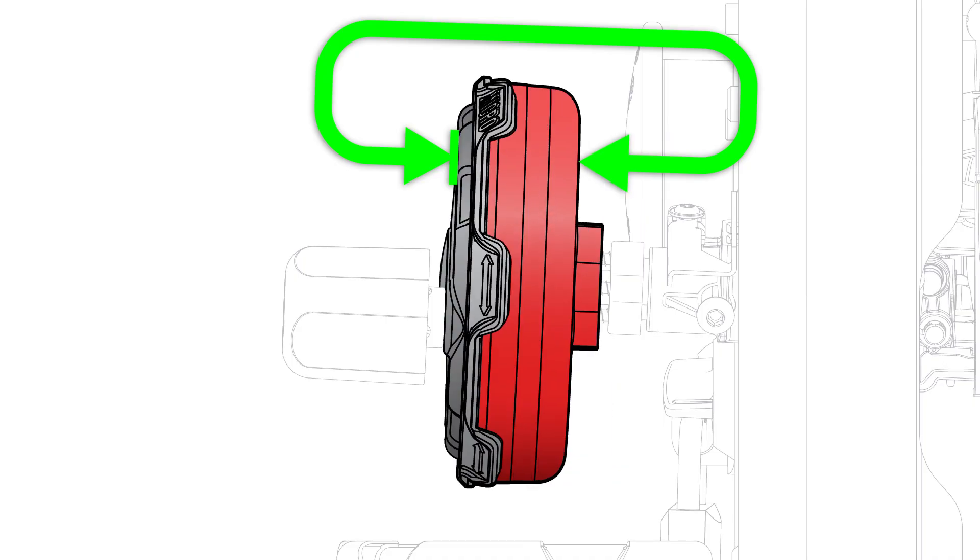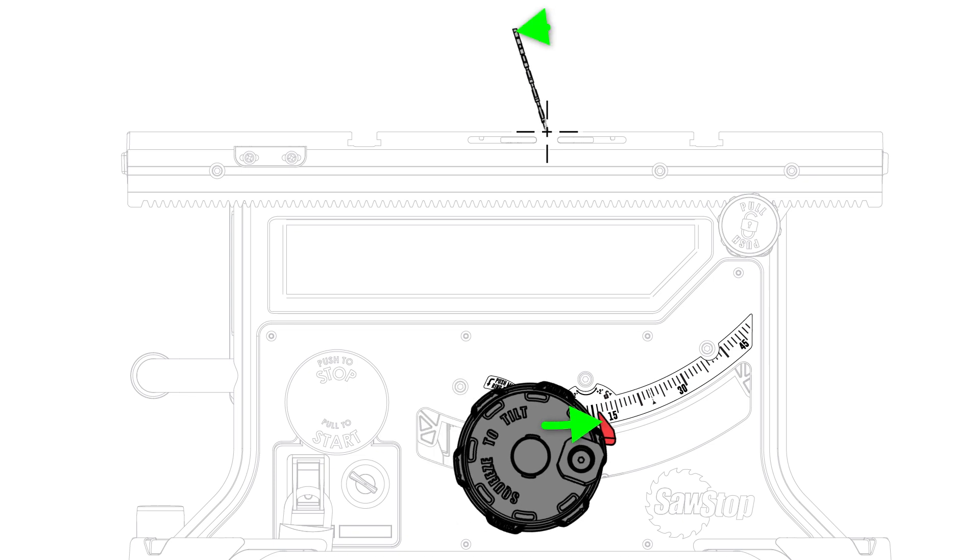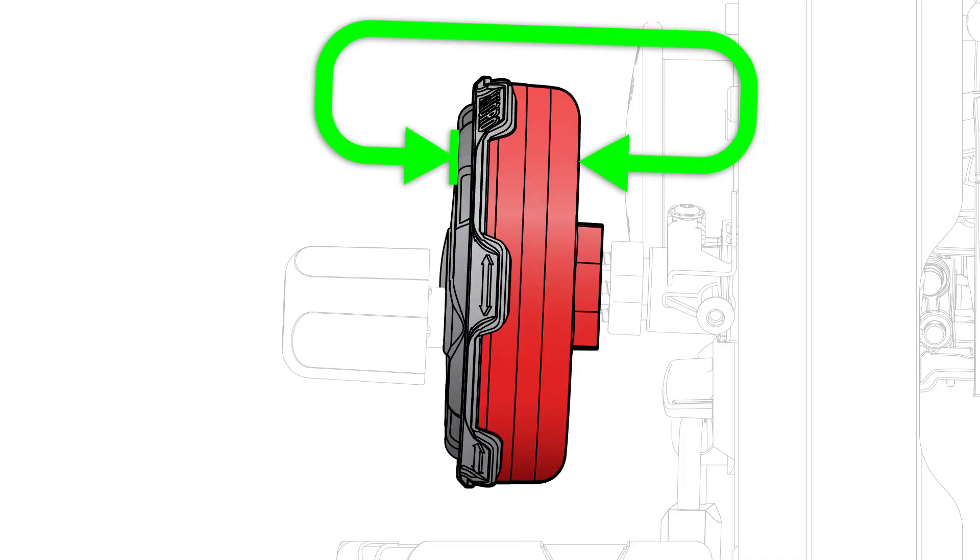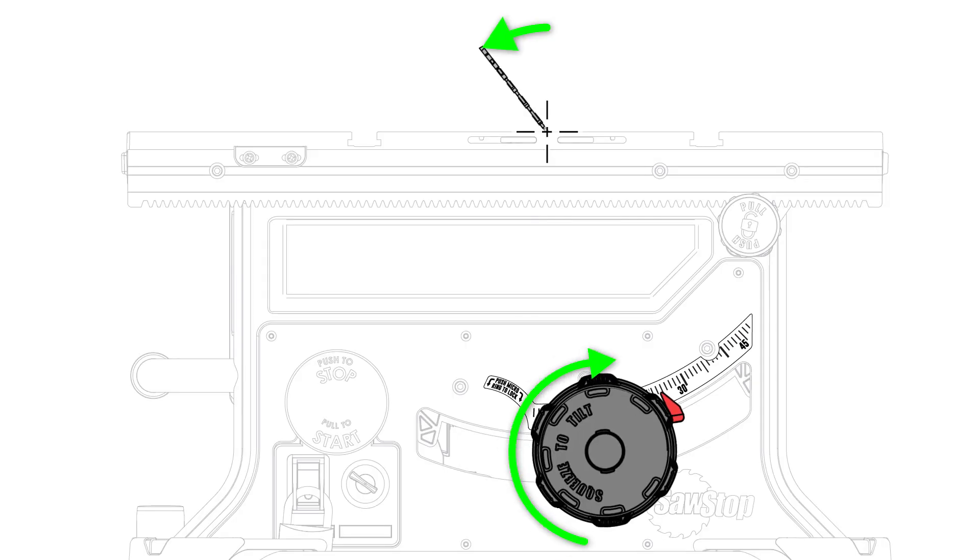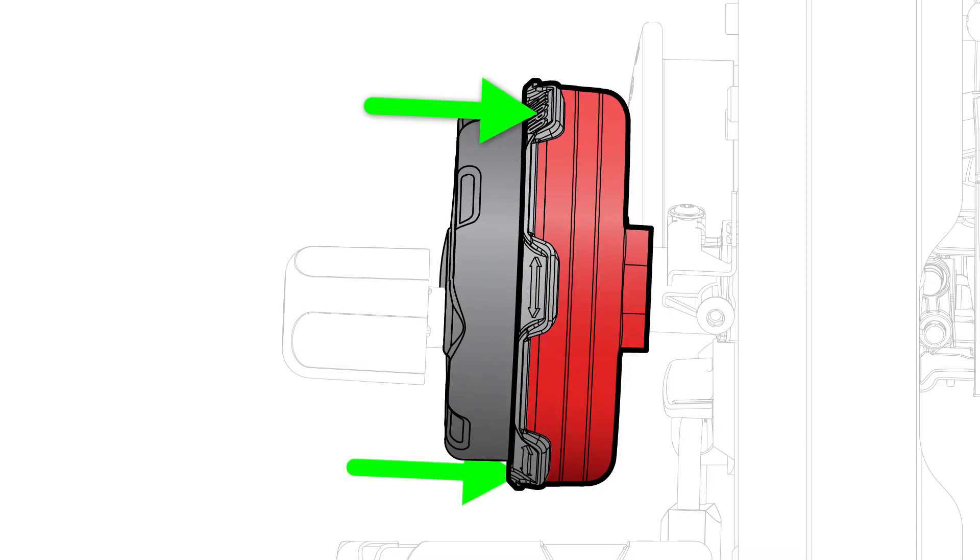To summarize, squeeze the control and set the bevel to an approximate angle. Release the control to set to that angle. Turn the wheel either clockwise or counterclockwise to adjust the micro bevel as needed, and then push the wheel to lock the micro bevel.